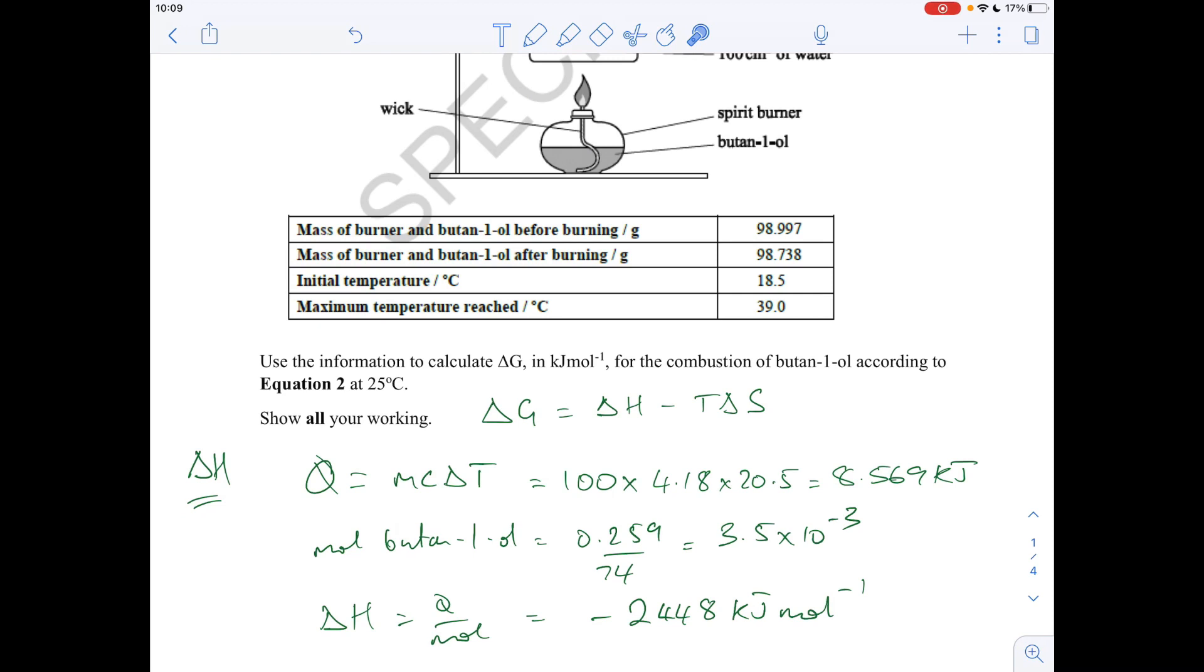The moles of butan-1-ol, so it's mass over MR. So it's the difference between these two masses - it's the mass of fuel burnt. MR of butan-1-ol is 74. So there's that many moles of butan-1-ol. And then delta H is the Q over the moles. Don't forget your minus sign because it's exothermic - the temperature of the water went up. So minus 2448 kilojoules per mole.